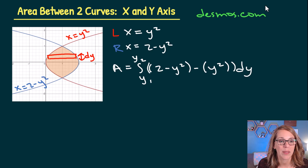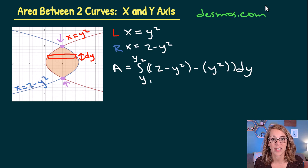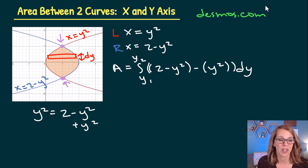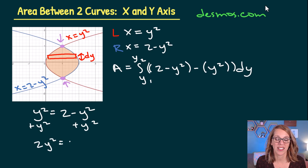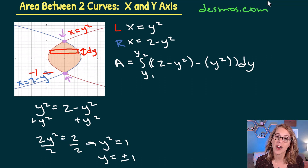Now let's find the limits of integration from those two points of intersection. I'll do this mathematically by setting the two functions equal: y squared equals 2 minus y squared. Adding y squared to both sides gives 2y squared equals 2. Dividing by 2, y squared equals 1, so y equals plus or minus 1. These are my two points of intersection — negative 1 as the lower limit and positive 1 as the upper limit.